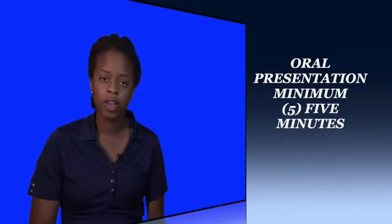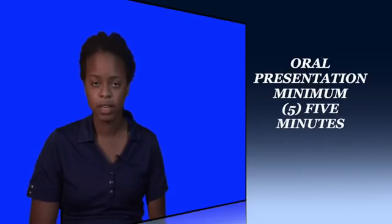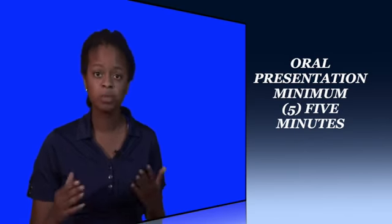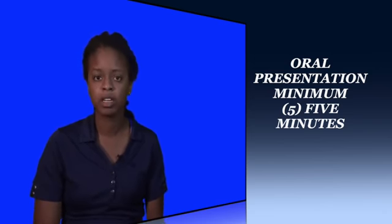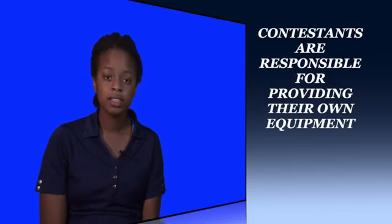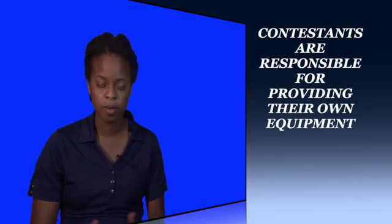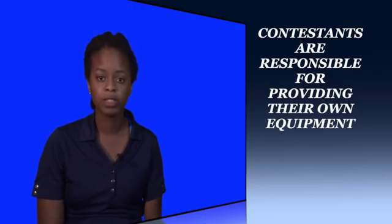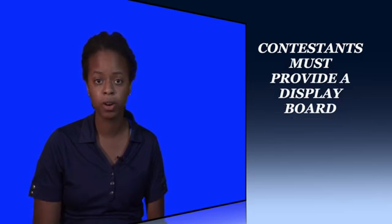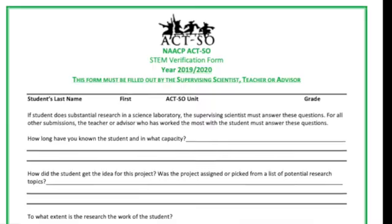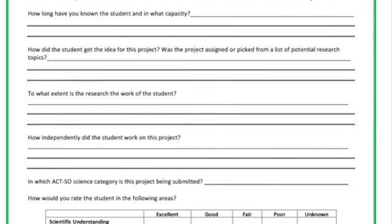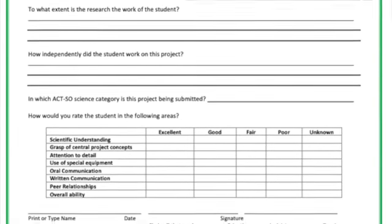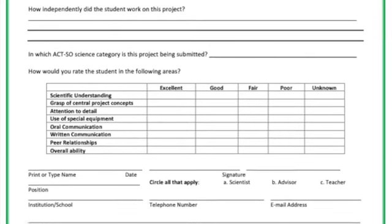You will also need to do an oral presentation, and that needs to be five minutes. Make sure that you're practicing your presentation so that way it sticks to that five minutes and you're prepared to answer any questions that the judges may have. Contestants are required to provide their own equipment, but you can request electrical power and a table for your display board if you need it. Just make sure that you make that request ahead of time.